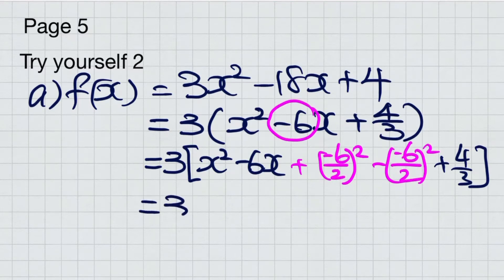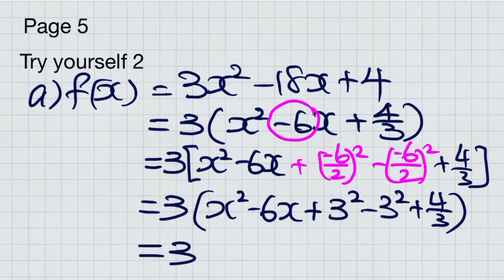If that simplifies, negative becomes positive. 6 divided by 2 is 3, then 3 squared. Let's factorize this.